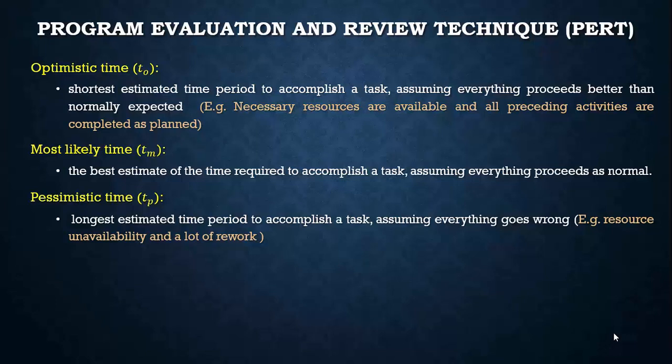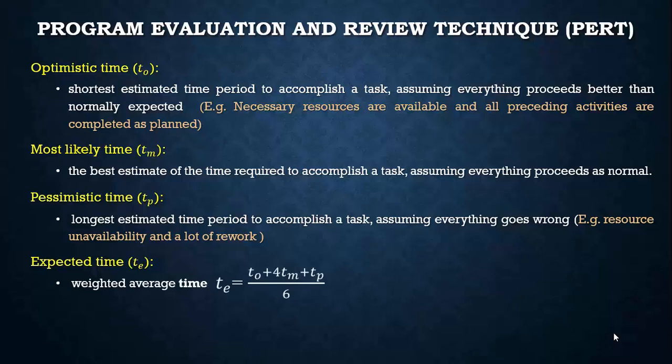We need to find a definite time — the expected time — in order to construct the network. It is found using the above three different time estimates and is a weighted average time. The expected time duration is found using the formula: optimistic time plus four times the most likely time plus pessimistic time, all divided by six.